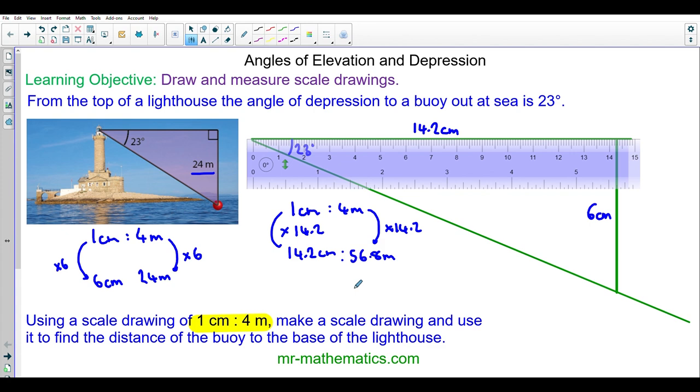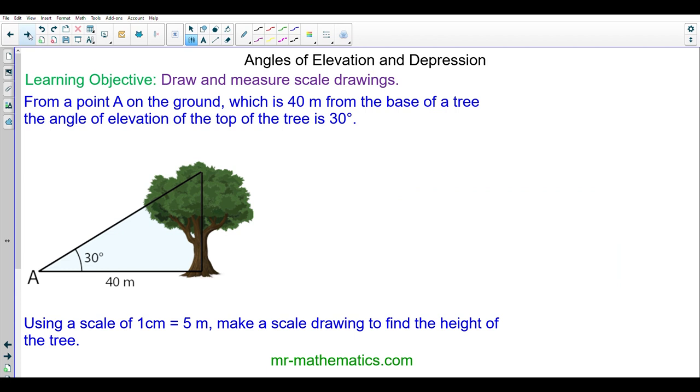Let's move on to the next question. From a point on the ground which is 40 meters from the base of a tree, the angle of elevation of the top of the tree is 30 degrees. Do you want to try constructing a scale drawing of this diagram by pausing the video? You can resume when you're ready.